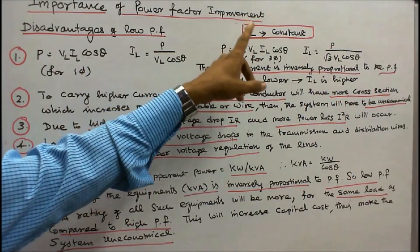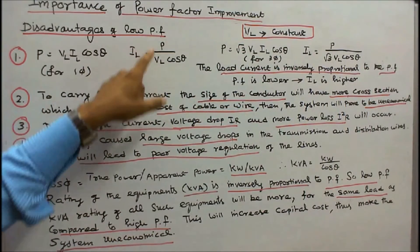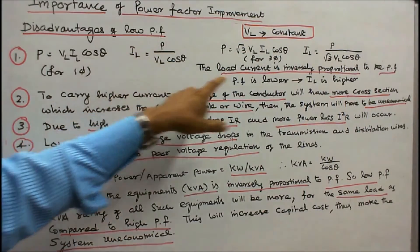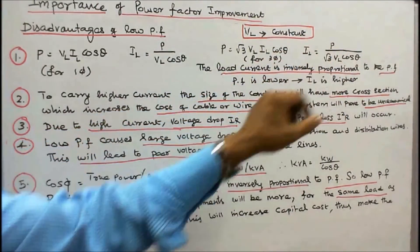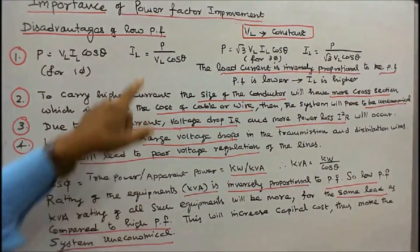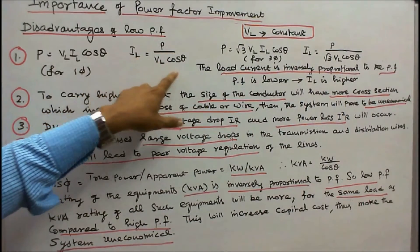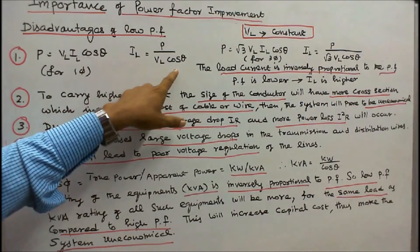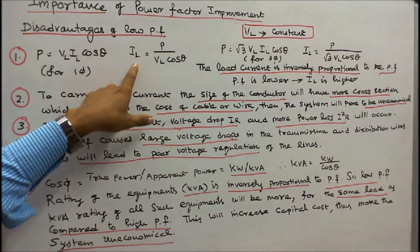Here, VL line voltage is constant. IL is equal to P divided by VL cos θ. IL is equal to P divided by √3 times VL cos θ. It is clear that the load current is inversely proportional to the power factor. When power factor is lower, IL is higher, line current or load current is higher.